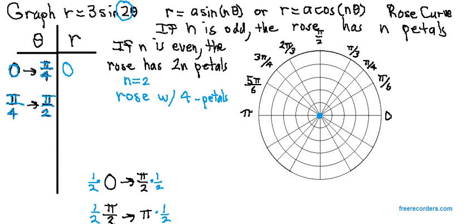Now, if we plug in pi over 4 for theta, pi over 4 times 2 is 2 pi over 4, which reduces to pi over 2. The sine of pi over 2 is 1. 3 times 1 is 3.